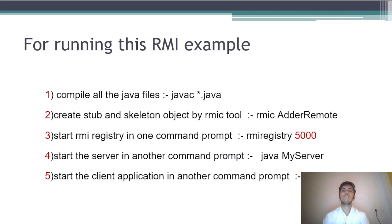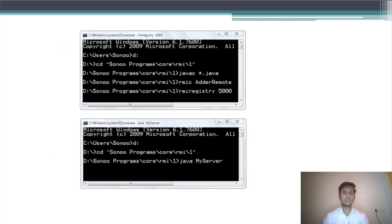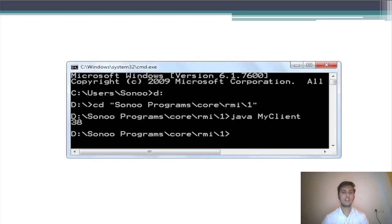For running this RMI example: first, compile all the Java files; after that, create the Stub and Skeleton object using RMIC; start the RMI registry in one command prompt; start the server in another command prompt; start the client application in another command prompt. This is the output of the program — here we can see that 34 plus 4 equals 38, and here we get the output.